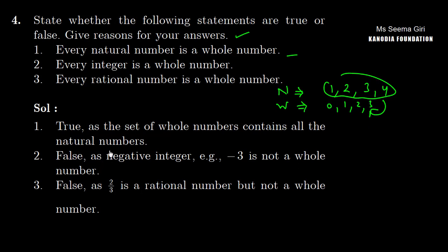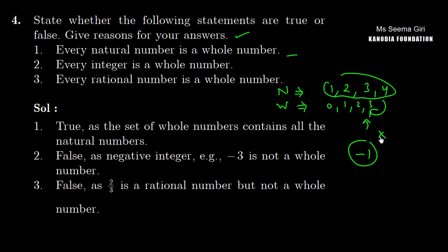Next statement: every integer is a whole number. This is FALSE. Not every integer can be a whole number, because negative integers — for example, -1 — are integers, but they are not part of the whole numbers. So this is false.